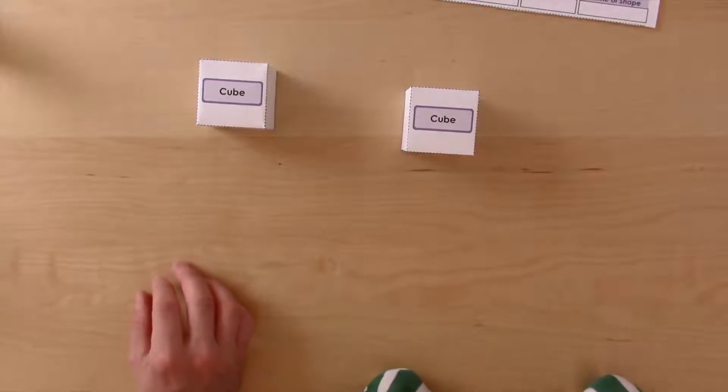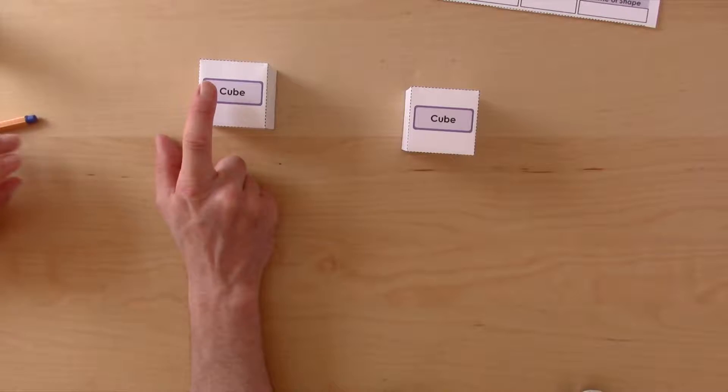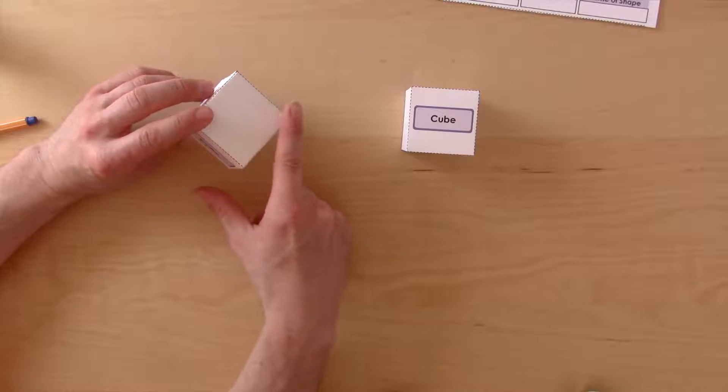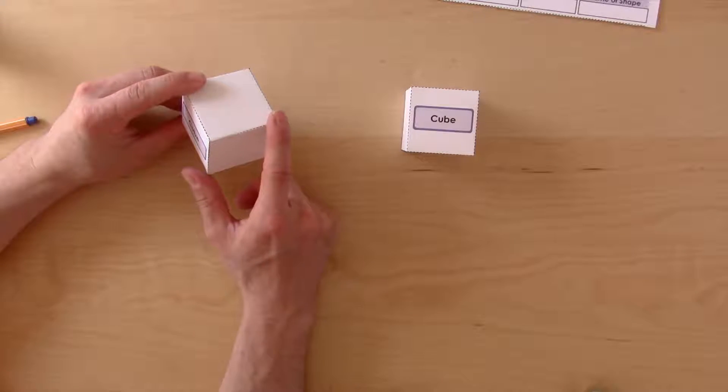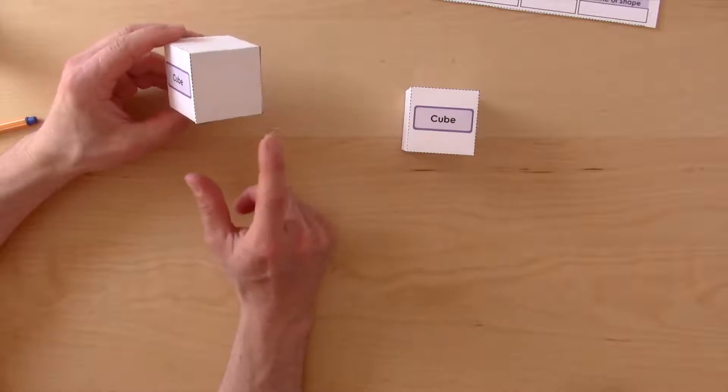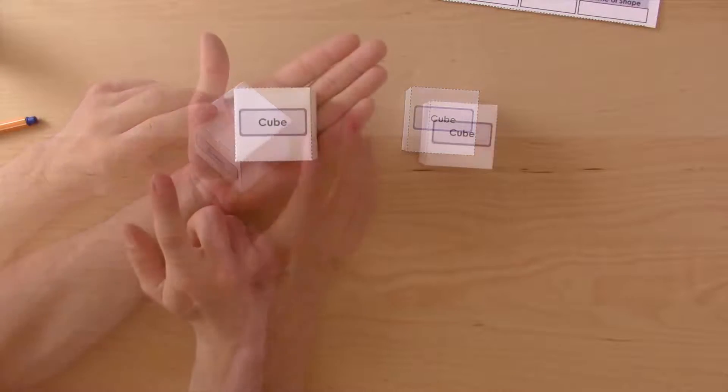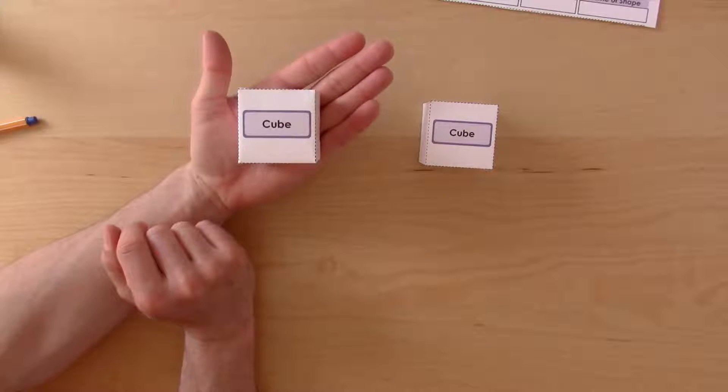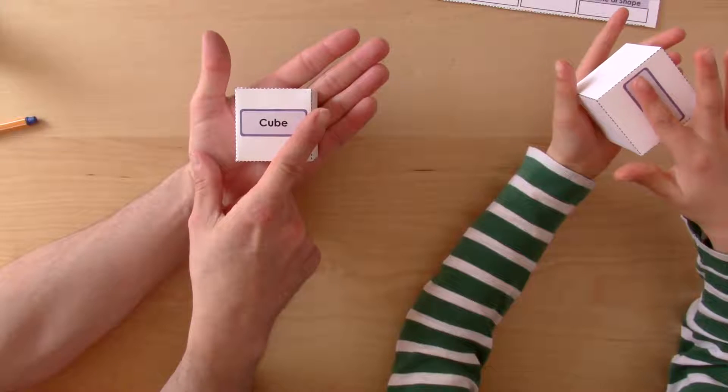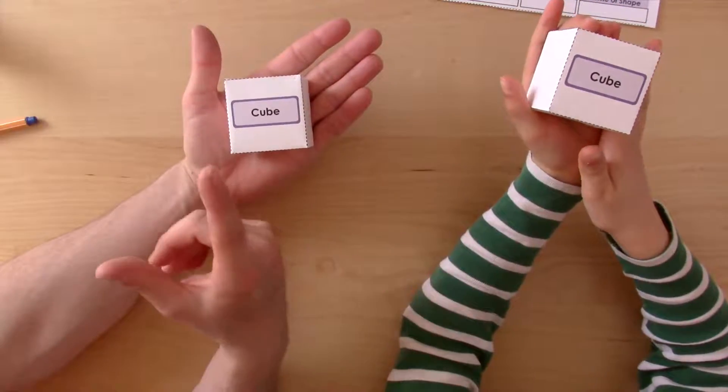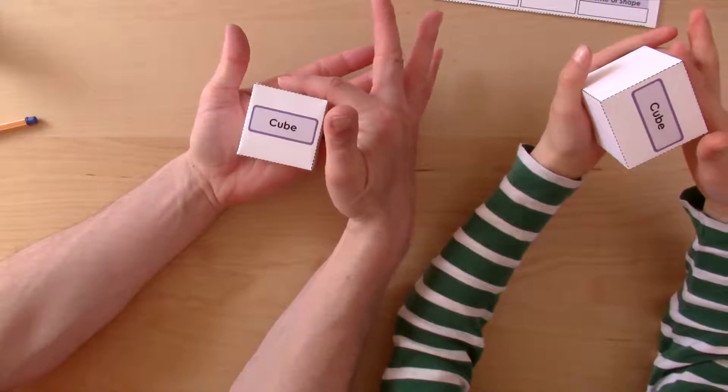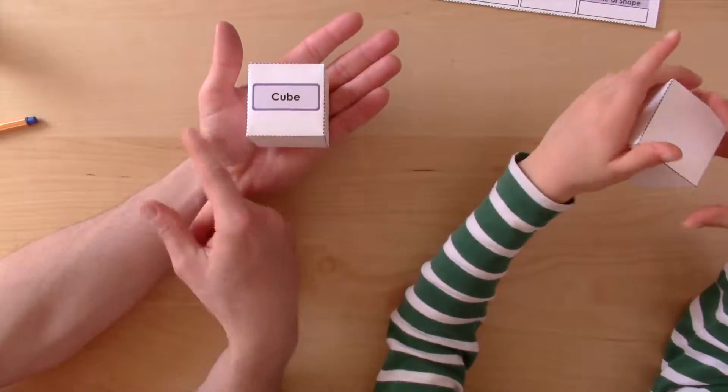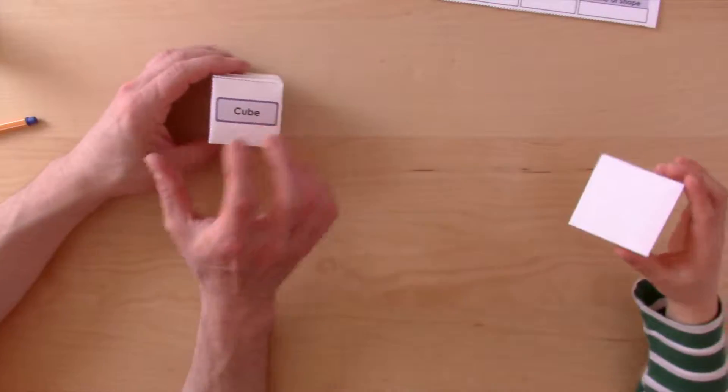Our next step is to decide how many surfaces a cube has, all the flat sides, how many edges a cube has, and then how many points a cube has. So let's count the, what would you like to count first Elliot? The surfaces, edges, or points? The surfaces. One, two, three, four, five, six. Six surfaces.